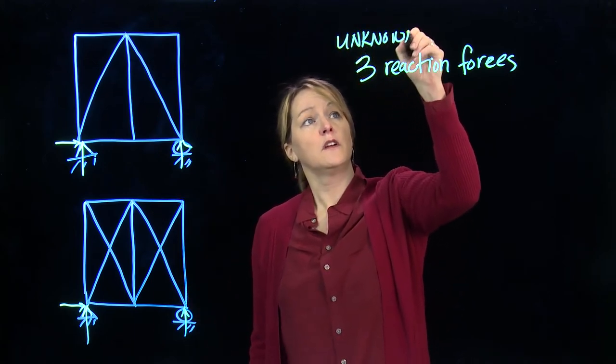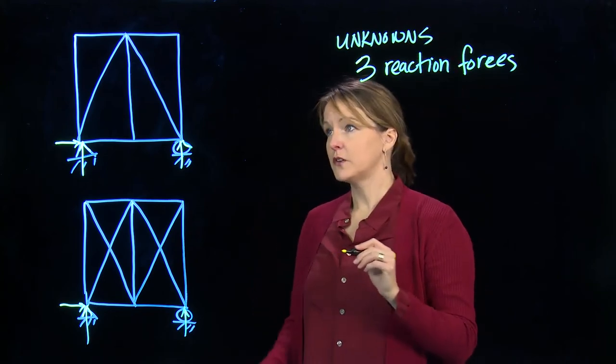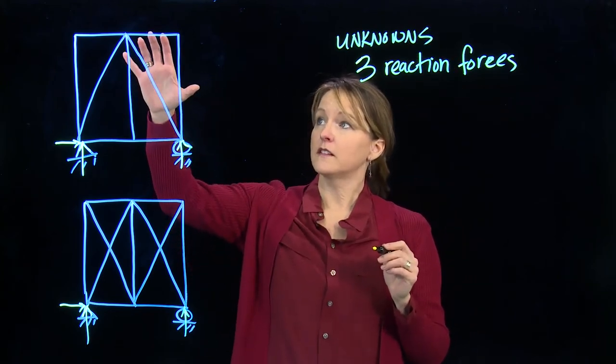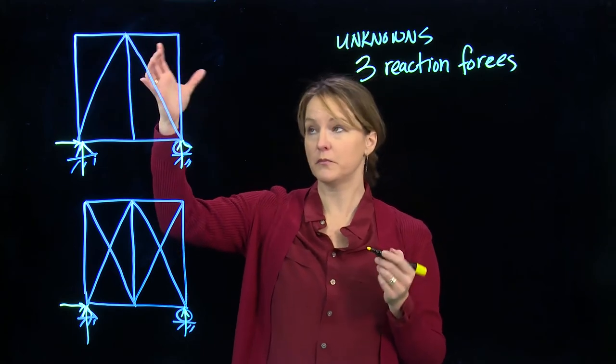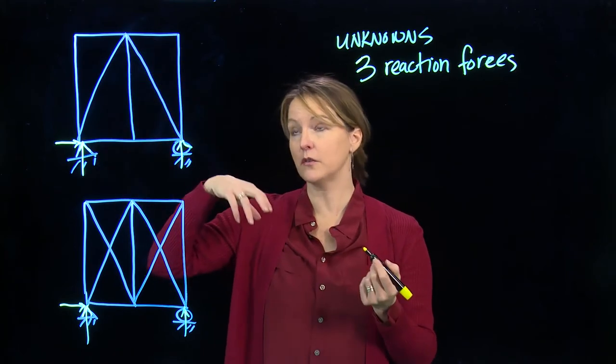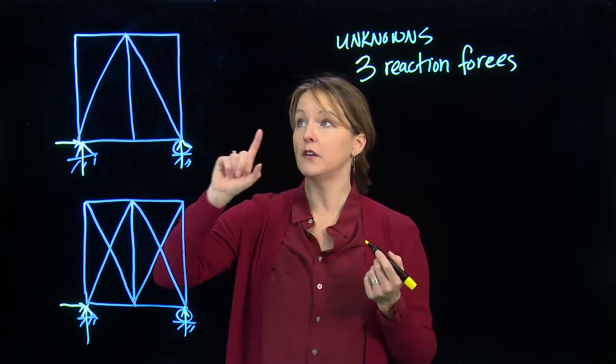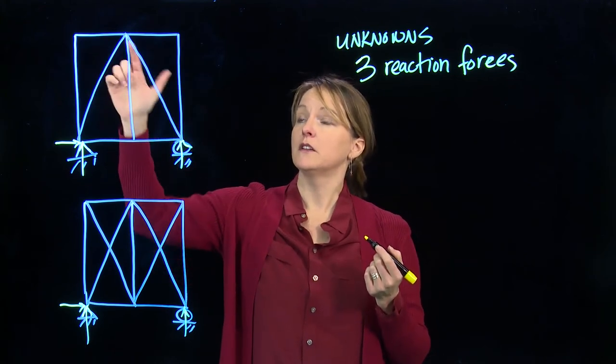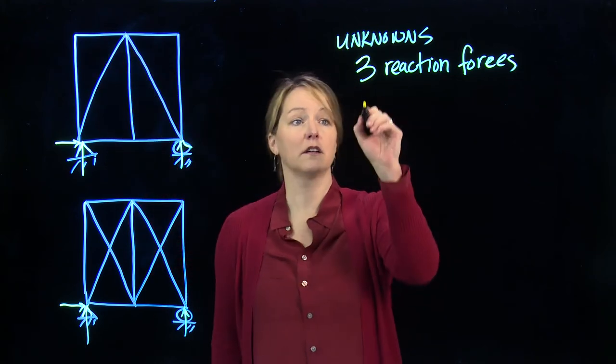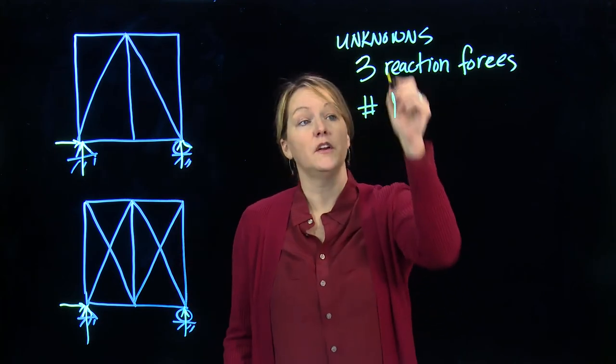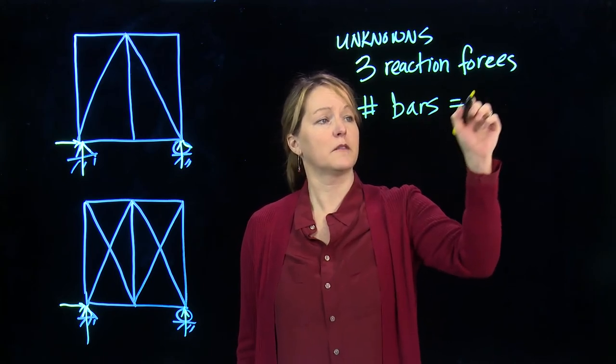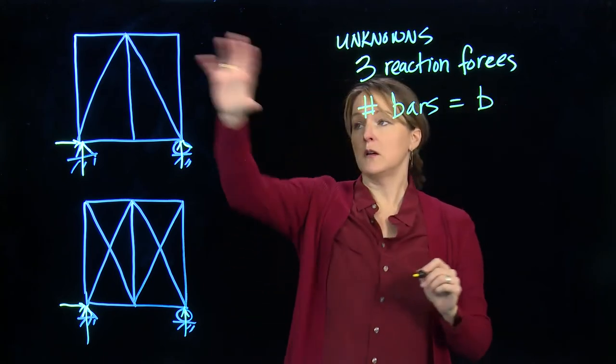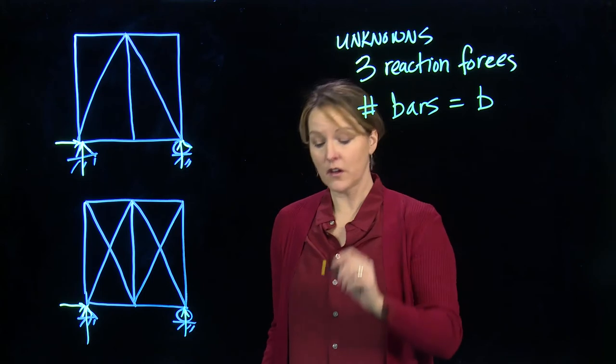So for unknowns, we have three unknown reaction forces. We also know if we have a truss and all the joints are pinned, each truss member will be either in tension or compression. So that's one unknown force per bar member. So the number of bars is also an unknown. So number of bars, I'm going to call that B, and those are unknowns. And then how do I solve for them?